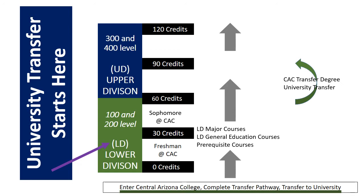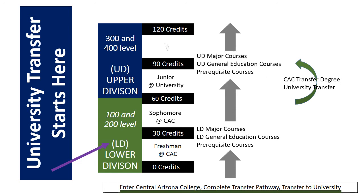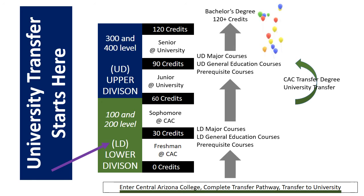It is highly recommended that you meet with your academic advisor to choose the correct pathway, courses, and transfer date for you. You will transfer to the university as a junior and complete the required 300 and 400 level courses that fill upper division major, general education, and prerequisite requirements. Once all requirements are completed — which is 120 credits or more — you will be awarded the bachelor's degree from the university you have attended.